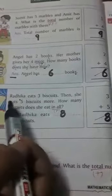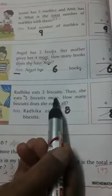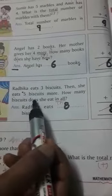Now question number 3. Radhika eats 3 biscuits. Then she eats 5 biscuits more. How many biscuits does she eat in all? Radhika eats 3 biscuits. Radhika ne kitne biscuits khaye? 3.